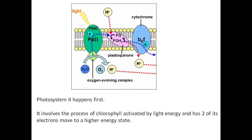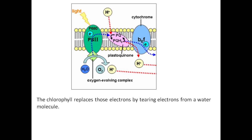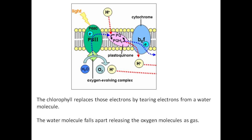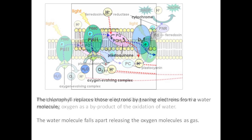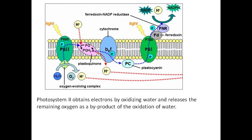Photosystem II happens first. It involves chlorophyll activated by light energy, causing two of its electrons to move to a higher energy state. The chlorophyll replaces those electrons by tearing electrons from a water molecule. The water molecule falls apart, releasing oxygen molecules as gas. Photosystem II obtains electrons by oxidizing water and releases the remaining oxygen as a byproduct.